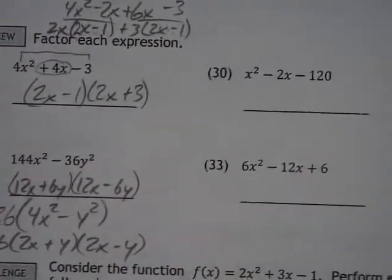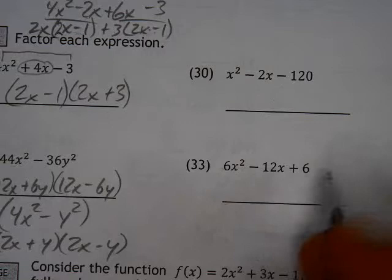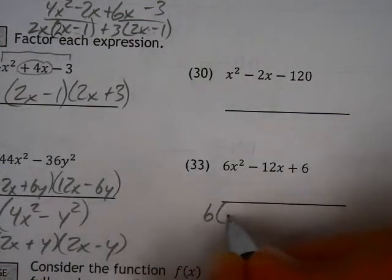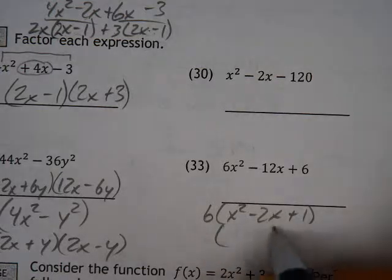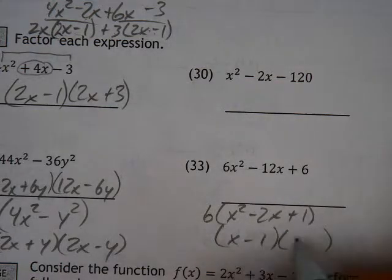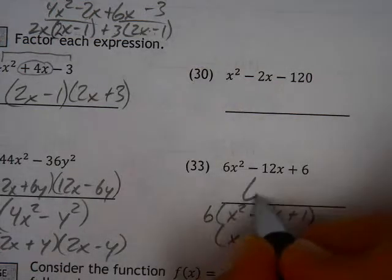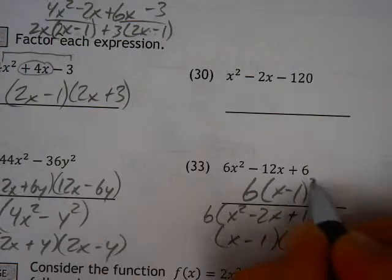And while we're looking at taking something out, you can take out a 6 here, so that gives you 6 and then x squared minus 2x plus 1. Well, that factors to be x minus 1 and x minus 1, or 6 times x minus 1 quantity squared.